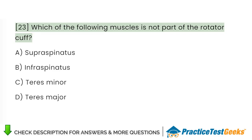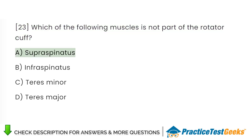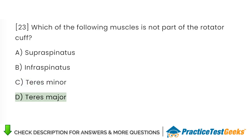Which of the following muscles is not part of the rotator cuff? A. Supraspinatus. B. Infraspinatus. C. Teres minor. D. Teres major.